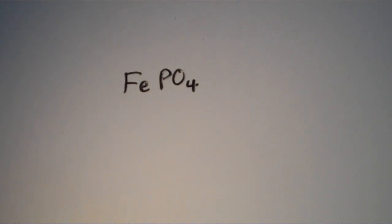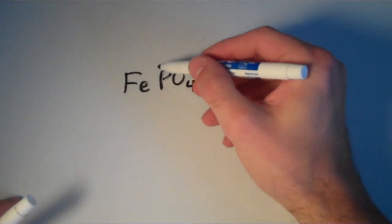FePO4. What is the name of this stuff? Well, as you might recall, iron is actually one of those metals that can form more than one type of cation. So when your metal forms more than one type of cation, it's a good idea to start with your anion first and then see if you can figure out the charge of your cation from whatever the charge of your anion is.